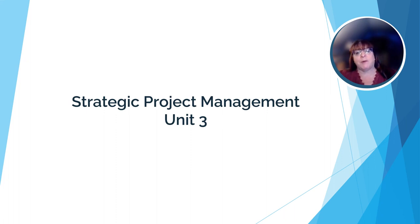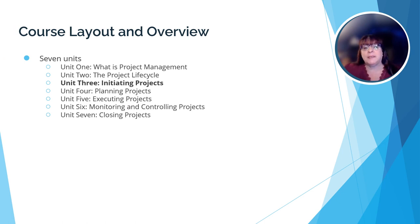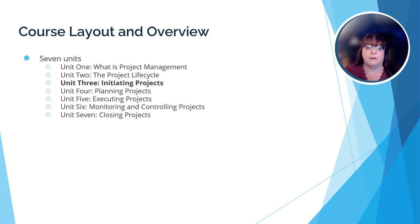But first, a bit of a reminder about how this works. There are seven units in this course. In Unit 1, we learned what a project is, who makes the decision to take a project on, and what the triple constraint theory is. In Unit 2, we looked at an overview of the project lifecycle.